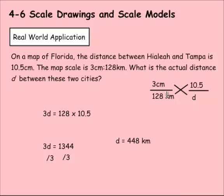Just a recap: the scale was 3 centimeters to 128 kilometers — the map is 3 centimeters and the actual distance is 128 kilometers. We lined up map with map (10.5) and actual distance with actual distance (d). Then we cross-multiplied and solved to get 448 kilometers.